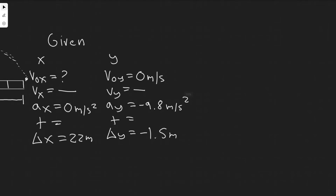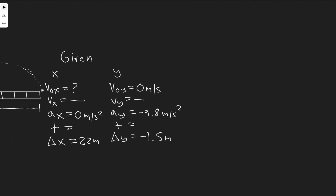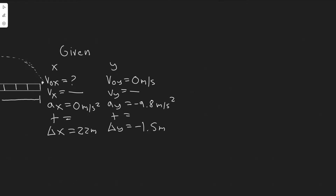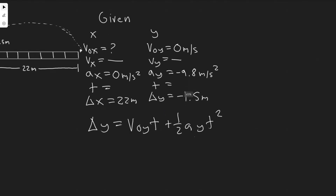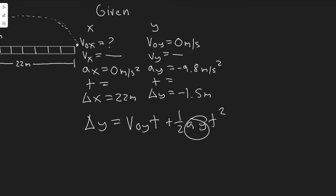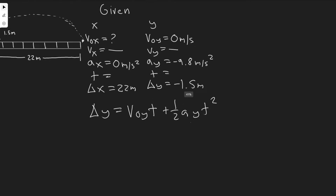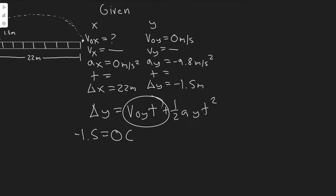Looking at my three y variables, I only need three to solve an equation. The equation we're going to use is: delta y equals the initial velocity in the y times t plus one half a times t squared. This is probably the most common kinematic equation. We know delta y, we know the initial velocity in the y, and we know the acceleration in the y, so the only variable left is t. Plugging in: minus 1.5 equals v sub zero y, which is zero, so that whole term goes to zero. We just have one half times minus 9.8 times t squared.